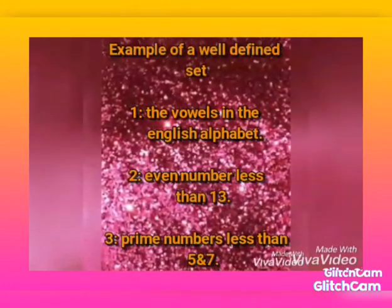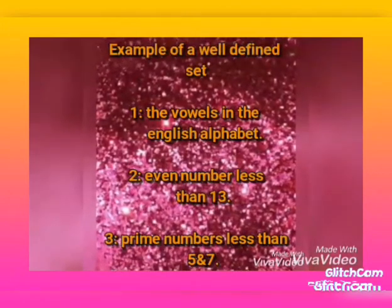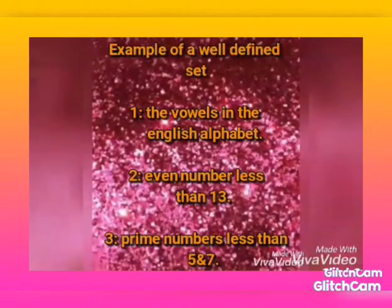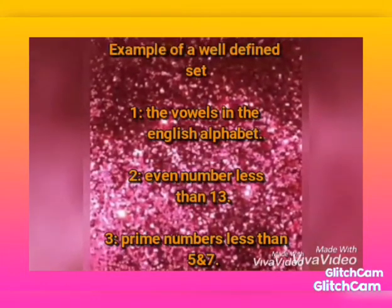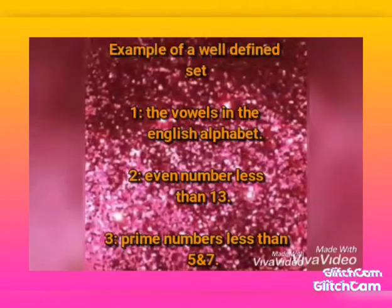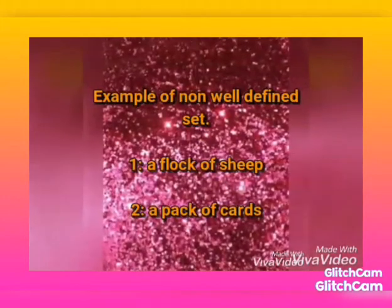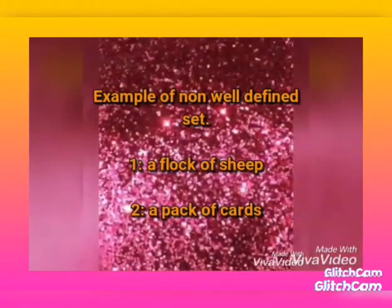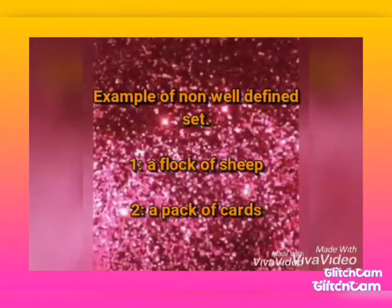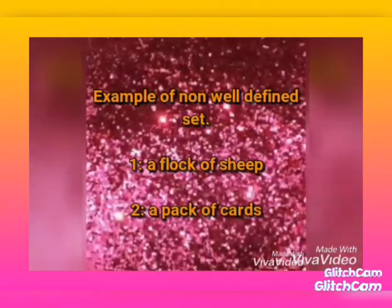Examples of well-defined sets: the vowels in the English alphabet, even numbers less than 13, and prime numbers less than 5 and 7. These are well-defined sets because all the members in the set can be listed. Examples of non-well-defined sets: a flock of sheep, a pack of cats. These are non-well-defined sets because all the members cannot be listed.